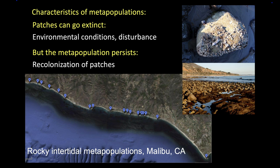Other key aspects of patches: patches can go extinct. Our critters in that patch can disappear, but the population can persist. Even if a fire burns that patch, or a predator eats all individuals there, the overall metapopulation can still be stable. A key idea: once a patch goes empty, it can be re-inoculated, re-colonized. Patches can go extinct and patches can be re-colonized.